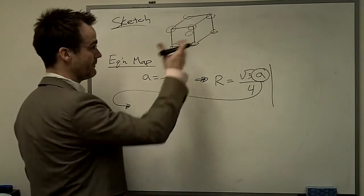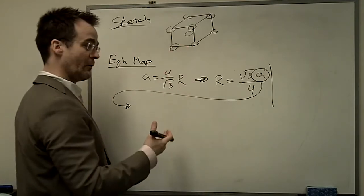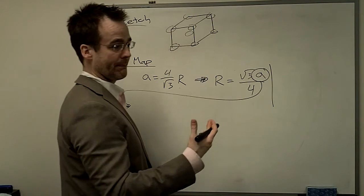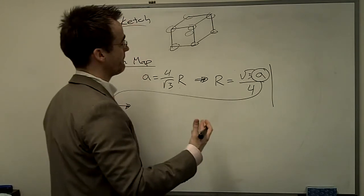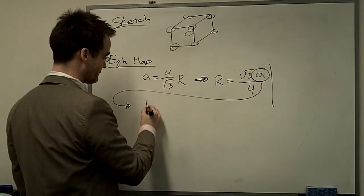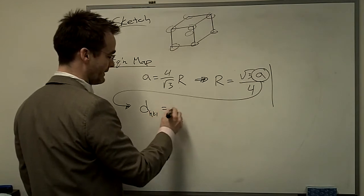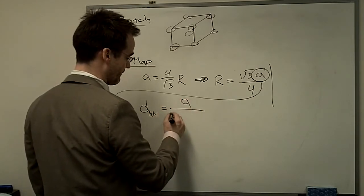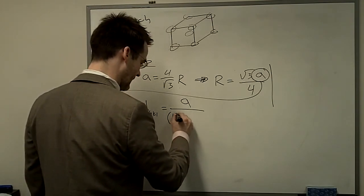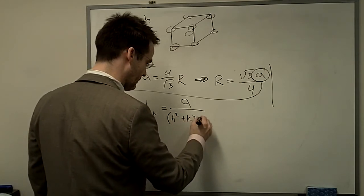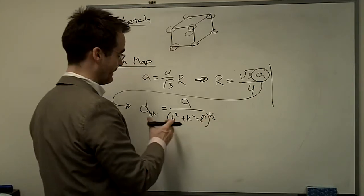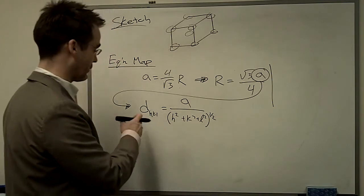So we actually, knowing that we had d_HKL from the previous question, hopefully we can realize that we have the relationship between the interplanar spacing and the lattice parameter for cubic crystals. So that's d_HKL equals A over the square root of H squared plus K squared plus L squared. These are the Miller indices for the set of planes that this interplanar spacing corresponds to.